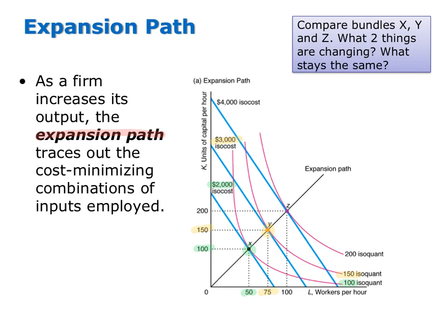Now imagine the firm wants to expand its output to 200 units. Bundle Z represents the minimum cost bundle of producing 200 units. At this point, the firm is using 100 workers per hour and 200 units of capital per hour, the cost of which is $4,000 — the minimum cost of producing an output level of 200 units. What an expansion path does is connect all of these bundles, tracing out all the cost-minimizing bundles of inputs that produce any level of output.